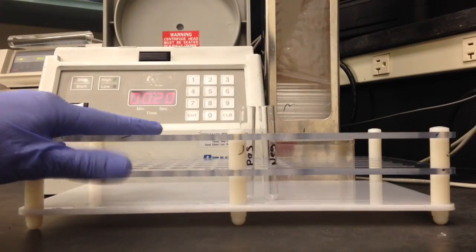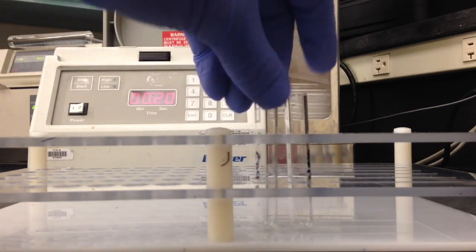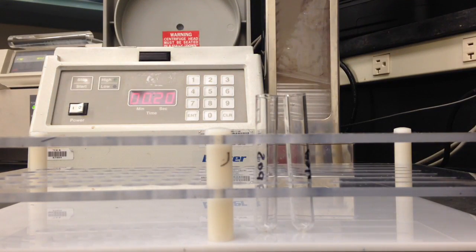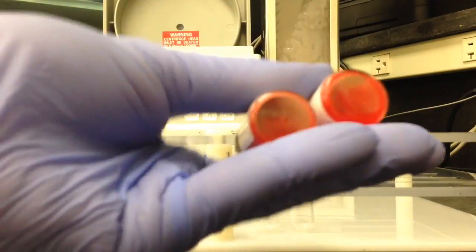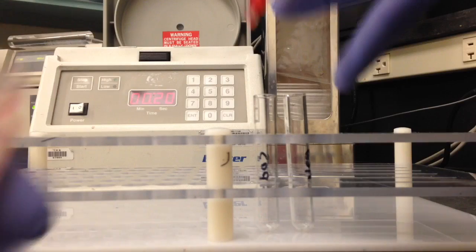So the first thing you're gonna go ahead and do is label your specimen tubes. Like I said I'm just doing the positive and the negative control. Then you're going to grab your positive and negative control, make sure you mix them really well, and then add one drop to the appropriate tubes.